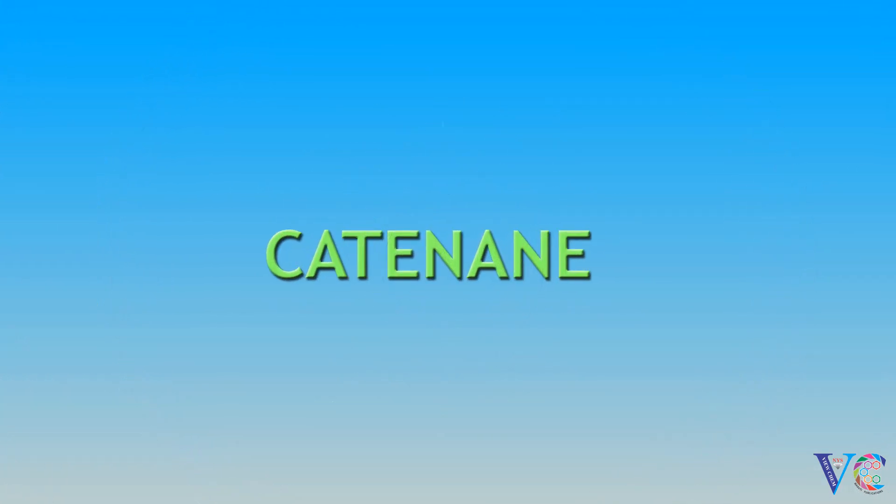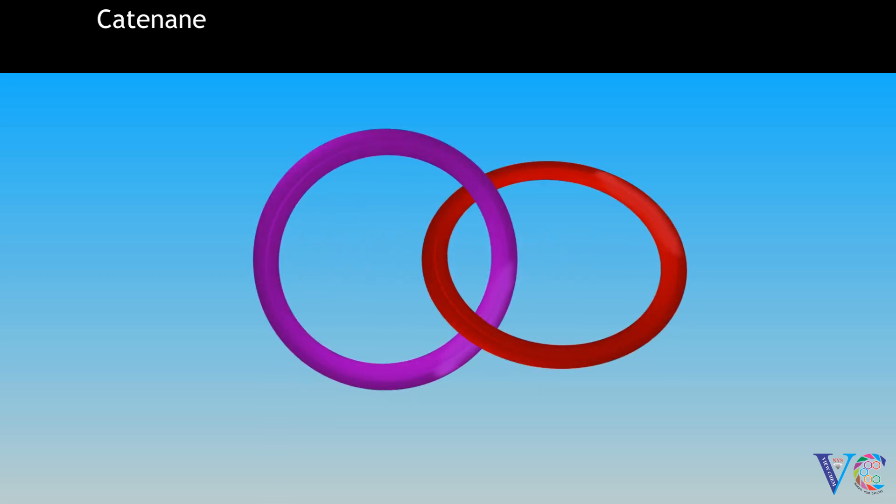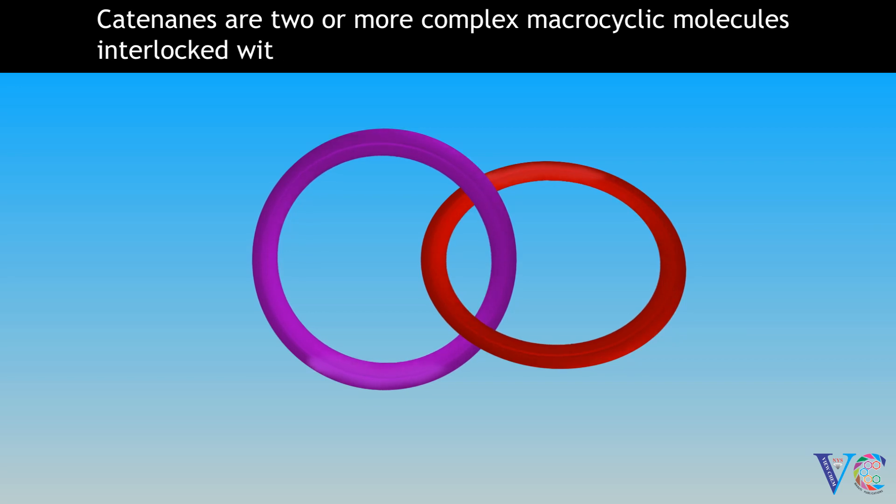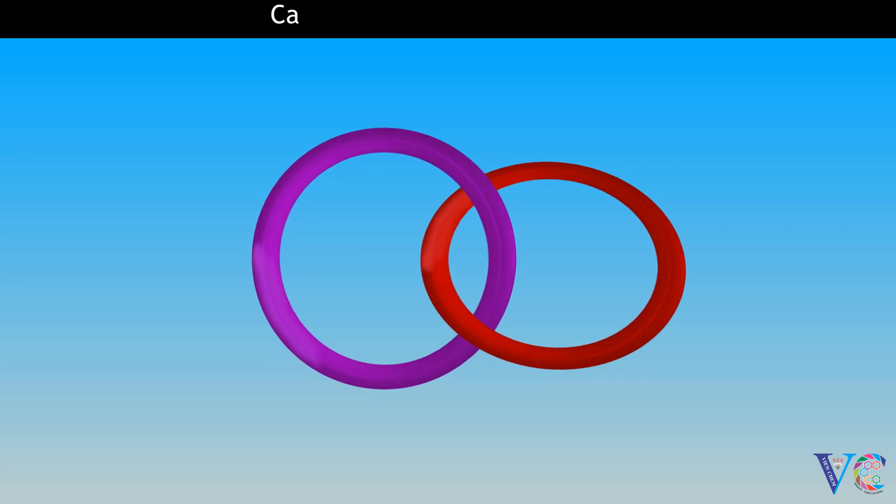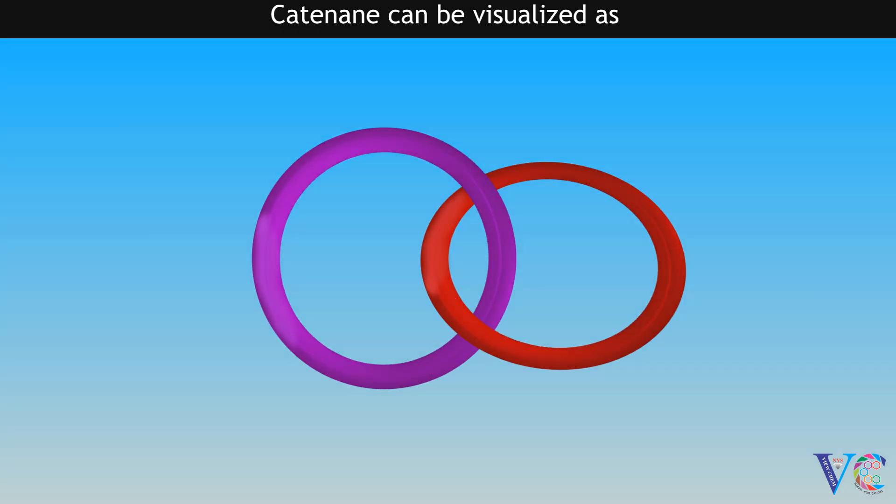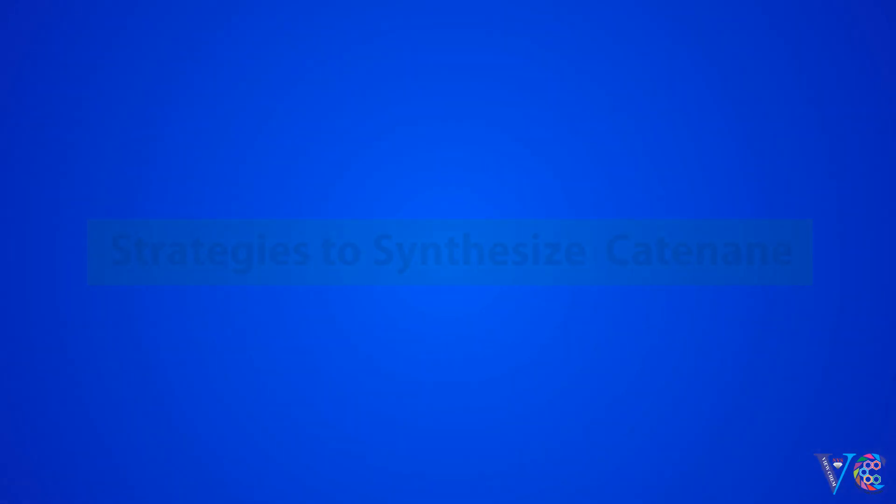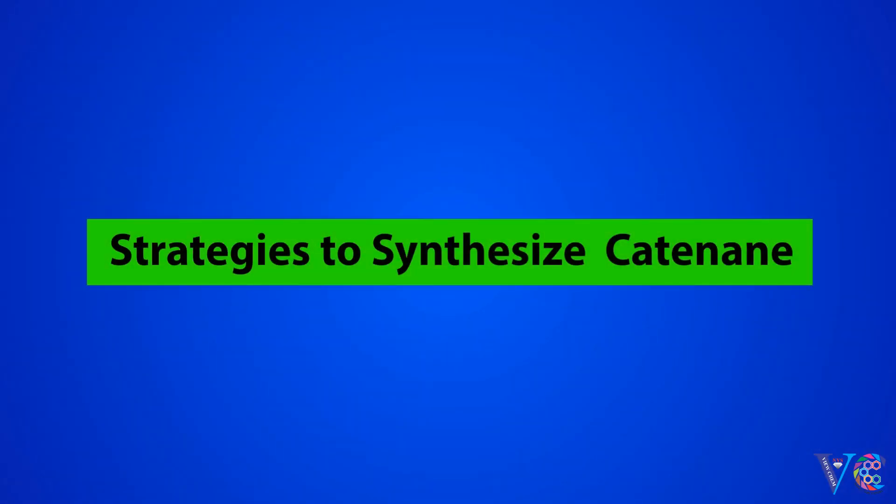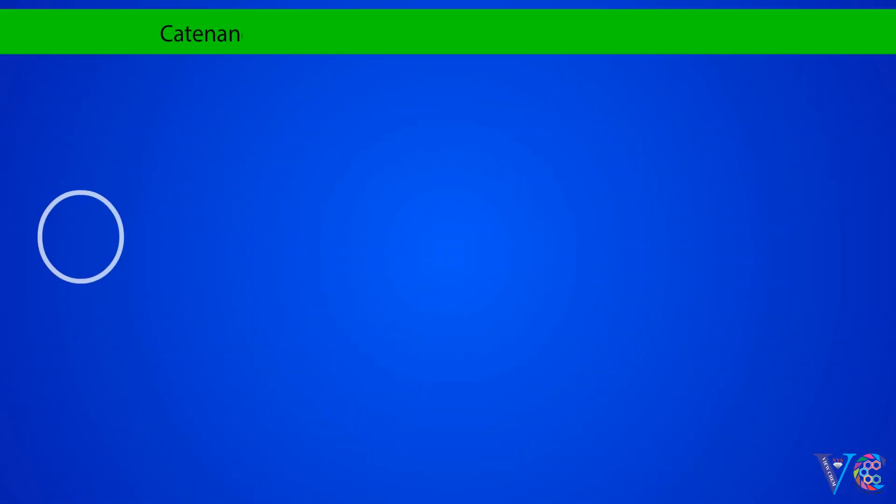Catenanes are two or more complex macrocyclic molecules interlocked without chemical bonding. Catenane can be visualized as interlocked rings. Strategies to synthesize catenane: catenane can be synthesized by the ring closure reactions.